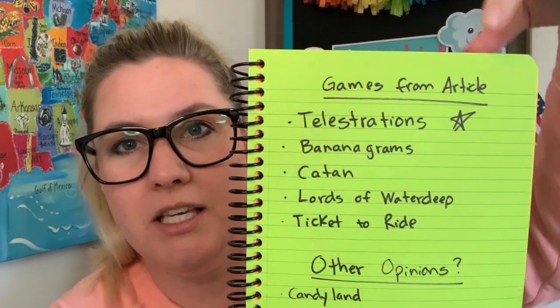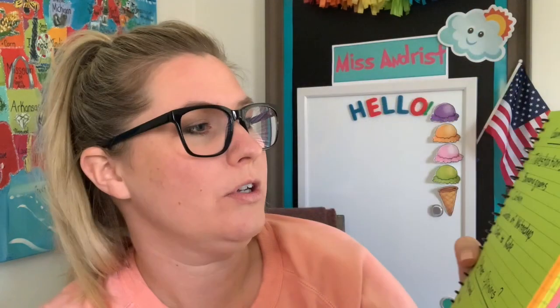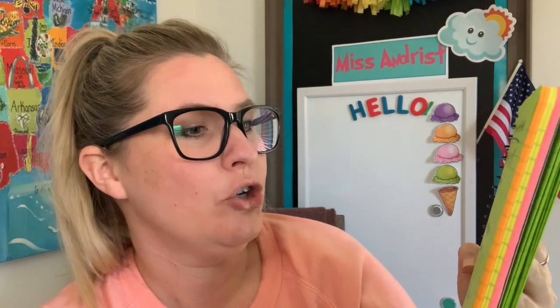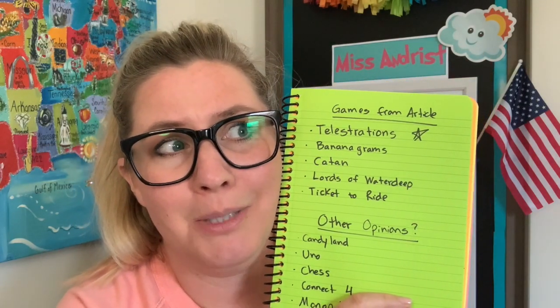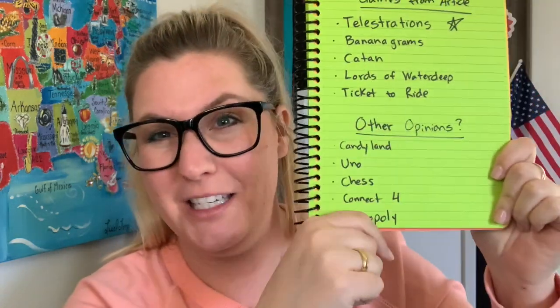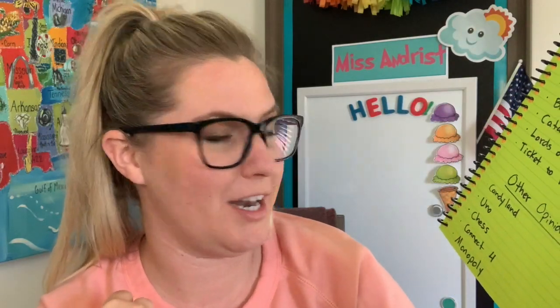So you might have pulled up the article about board games and read it already — it's just an article that talks about board games families play at home, what each game does, and why it's cool. If you're using the same article as me, these were some of the games in it: Telestrations, Bananagrams, Catan, Lords of Waterdeep, and Ticket to Ride. If you don't have the same article, you might think about games you've played yourself — like Candyland, Uno, Chess, Connect Four, or Monopoly.